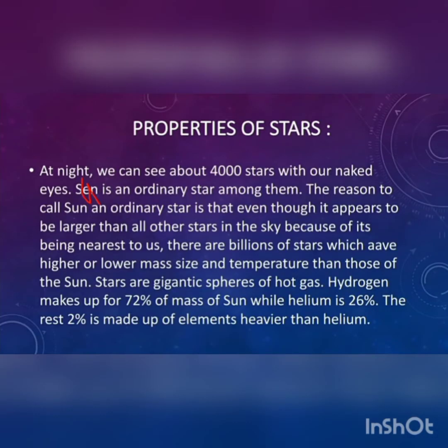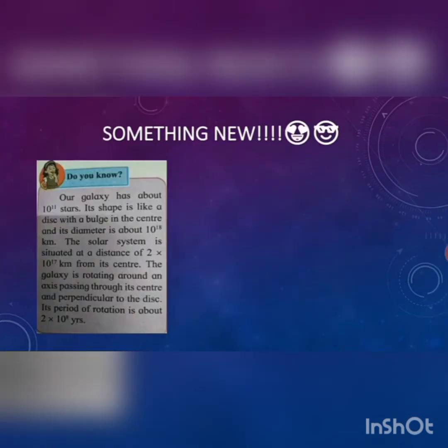The Sun is an ordinary star among them. The reason to call the Sun an ordinary star is that even though it appears larger than all other stars in the sky, that is because it is the nearest to us. There are billions of stars which have higher or lower mass, size, and temperature than the Sun. Stars are gigantic spheres of hot gases.